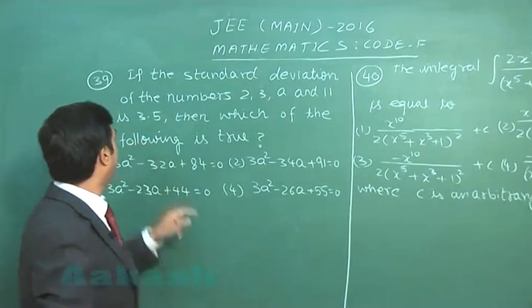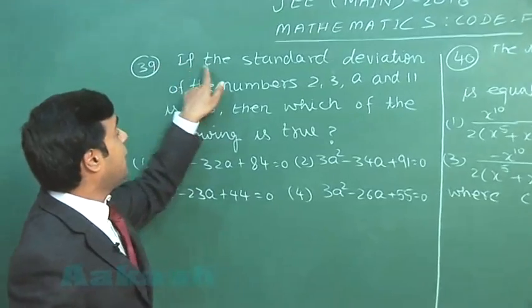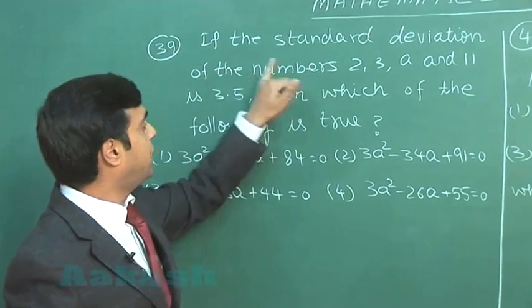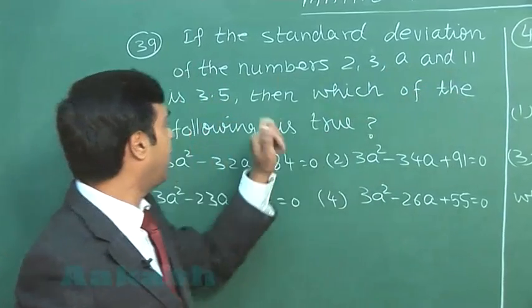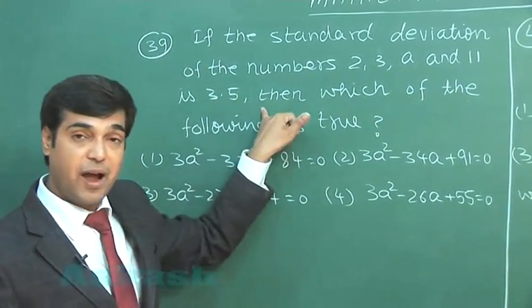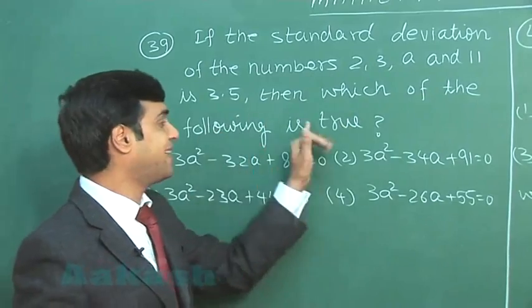Let us take the next one, that is question number 39. If the standard deviation of the numbers 2, 3, a and 11 is 3.5, then which of the following is true?